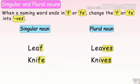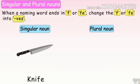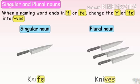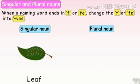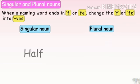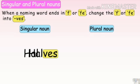Examples for changing F and FE into VES. Leaf — change F to VES — leaves. Knife — there is FE here, so change FE to VES — knives. There is one leaf and there are many leaves. Half — H-A-L-F. Remove F and write VES — halves.